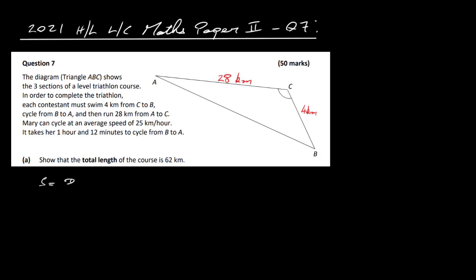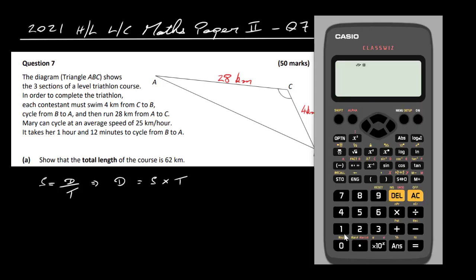Speed is equal to distance over time, so distance equals speed times time. The speed is 25 kilometres per hour and the time is 1 hour 12 minutes. Using the degrees and minutes button on the calculator — 1 degree, 12 minutes, 0 seconds — that converts to 1.2 hours.